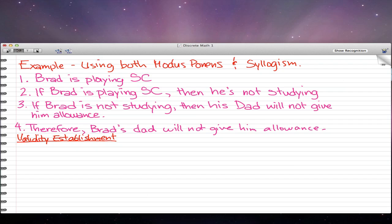Here I have four statements. Brad is playing StarCraft. Let's have that be our P. So the first statement is our P. If Brad is playing StarCraft, then he is not studying. That's P implies not Q, because we'll have Q be he is studying. Not Q would be the negation symbol Q.